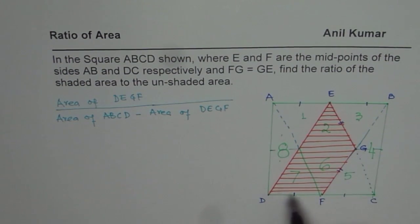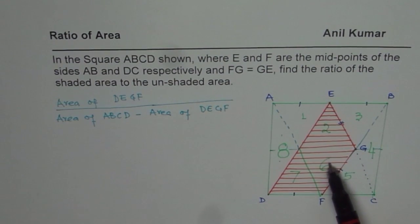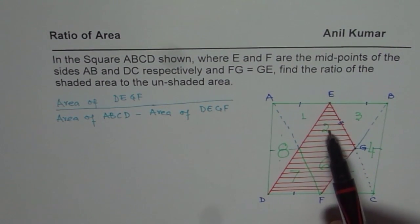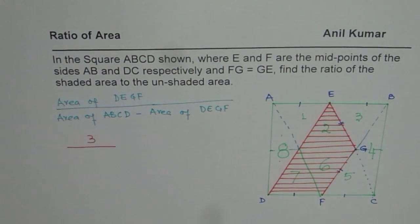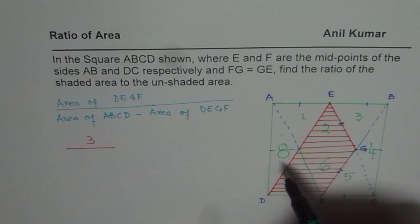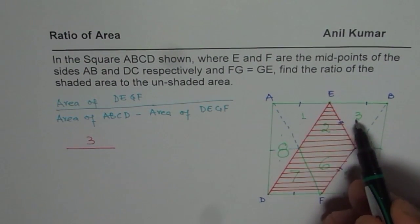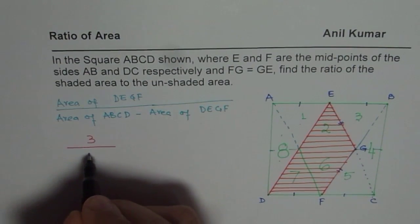Out of these triangles, how many are shaded? Triangle number 2, 6, and 7 are shaded. That means 1, 2, and 3. So we could write 3 on the top. And the ones which are not shaded are how many? Let's count them. They are 1, 2, 3, 4, and 5. So that is 5.